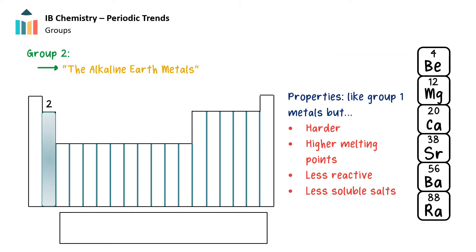Group 2 elements, which all have two valence electrons, are called the alkaline earth metals. These are harder and have higher melting points than the alkali metals, are slightly less reactive, and form less soluble salts.